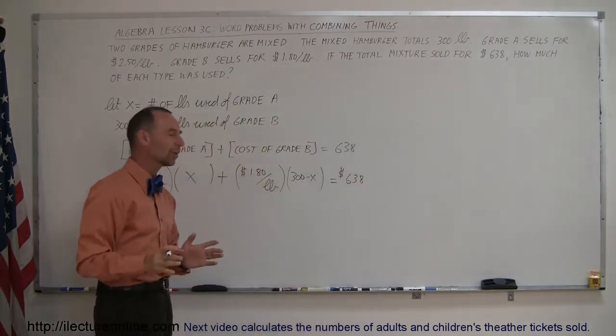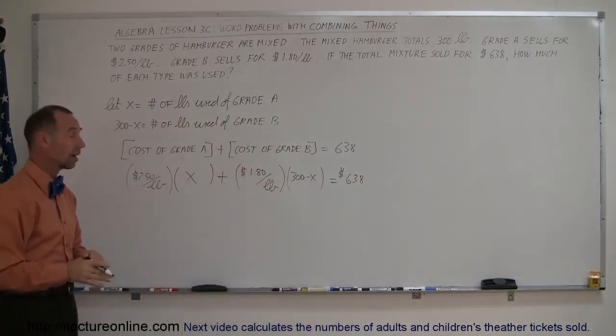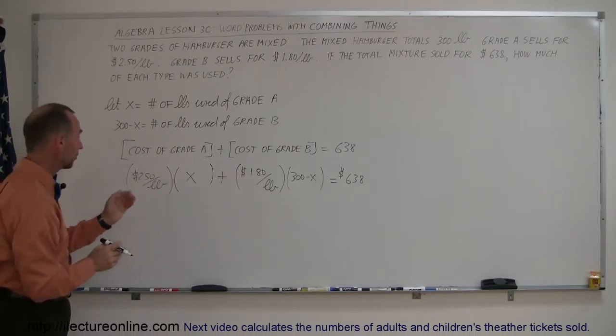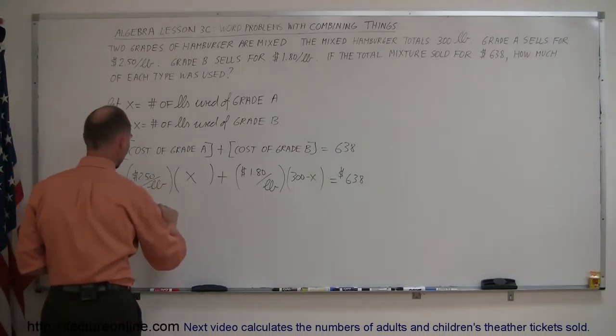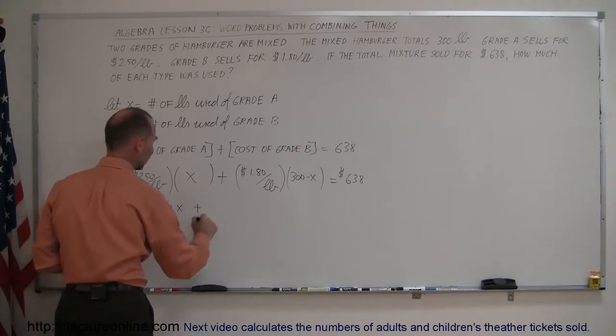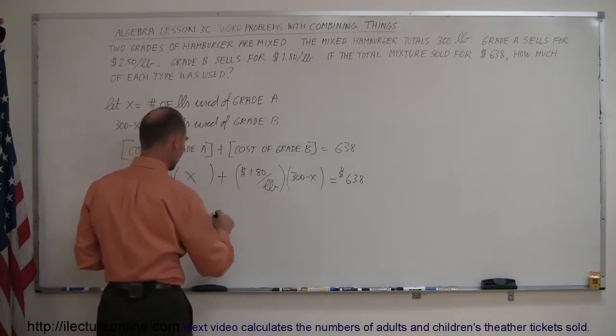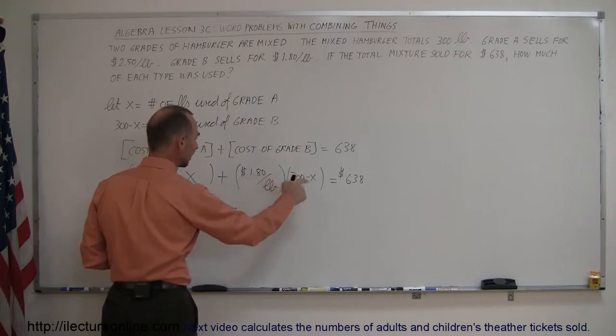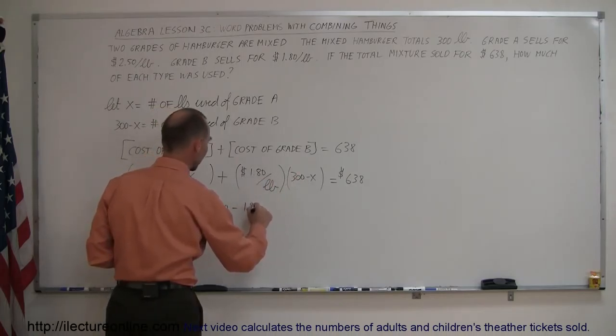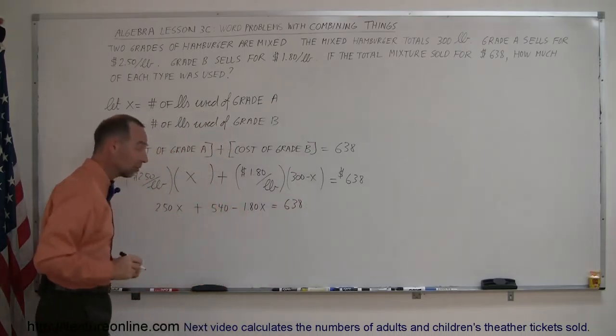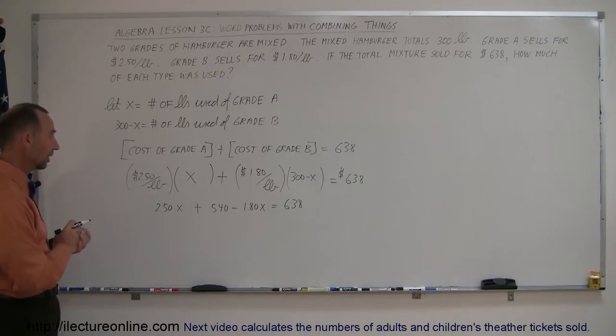Now, we can put in the dollar sign there. We don't, it's probably cleaner just to leave it off to make it easier to work with it. So, we'll leave the dollars and the per pound off. We'll just work with the numbers and see what we get. So, working out what's here, we have X times 2.50. So, 2.50X plus 1.80 times 300. That would be 540 minus 1.8 times X. So, it would be minus 1.80X. And that equals 638. And now we're ready to solve this equation for X.